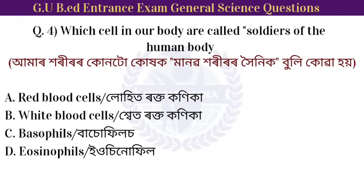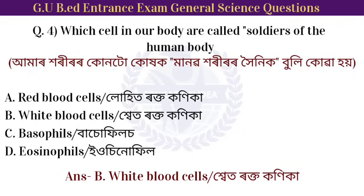Next question: which cells in our body are called soldiers of the human body? Option: White Blood Cells. White blood cells are called the soldiers of the human body.